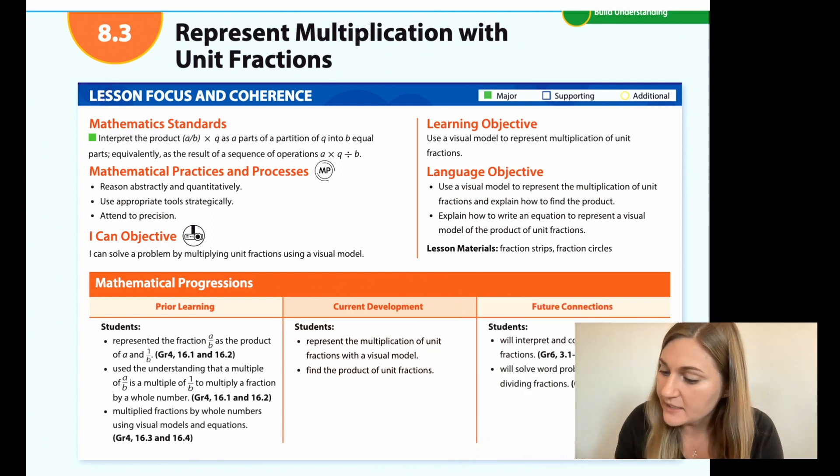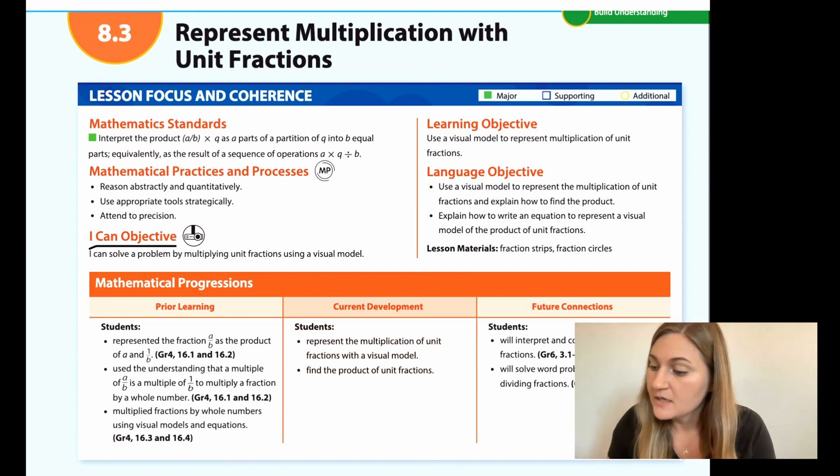I'm going to start off by going over the I Can objective. It says I can solve a problem by multiplying unit fractions using a visual model. And the learning objective says use a visual model to represent multiplication of unit fractions and the prior learning as students represented the fraction A over B as the product of A and 1 over B. Students use the understanding that a multiple of A over B is a multiple of 1 over B to multiply a fraction by a whole number and students multiply fractions by whole numbers using visual models and equations.